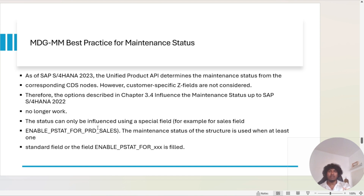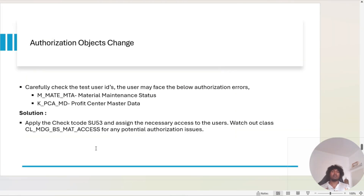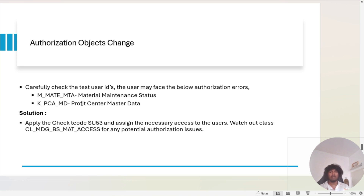The next issue is authorization. We tested everything in our quality system and our test user IDs faced authorization problems. If you face the same issues, check transaction AC53 and get the help of a basis/system team to fix it.